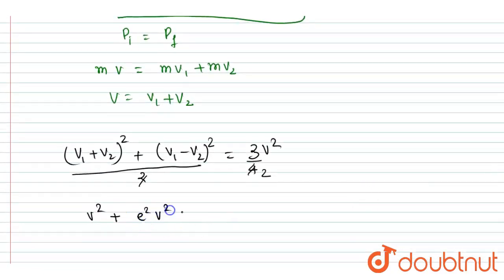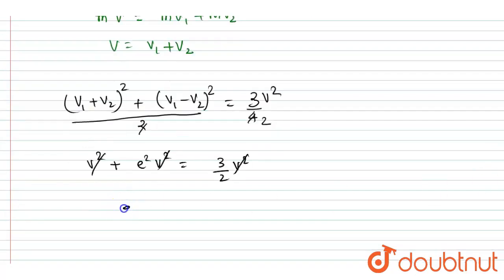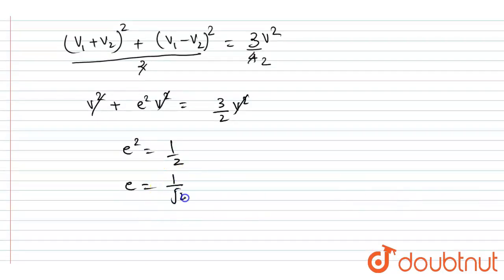So I will write e squared v squared is equals to 3 by 2 v squared. So you can cancel out this v, so you will get e squared is equals to half, and e will be equals to 1 by root 2 as the answer.